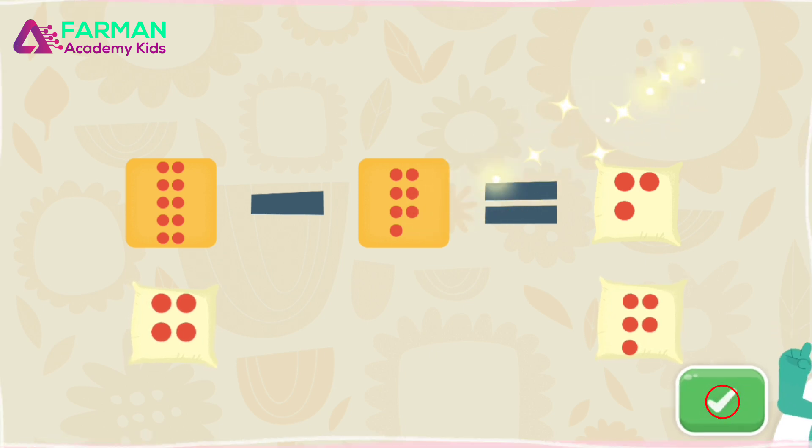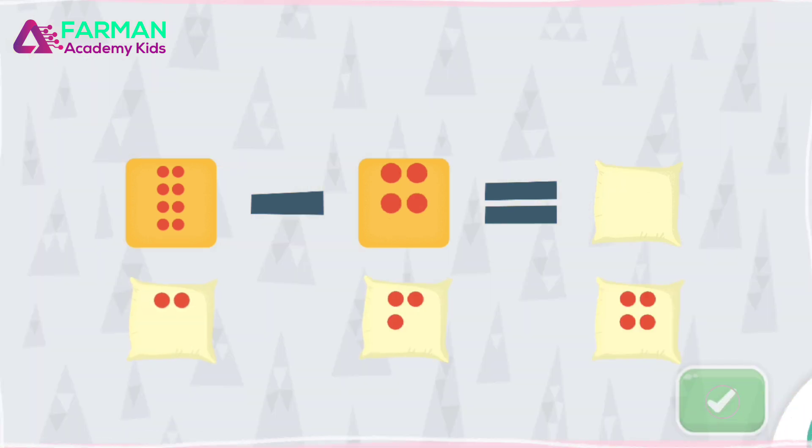Seven minus what equals four? Super! Seven minus three equals four.